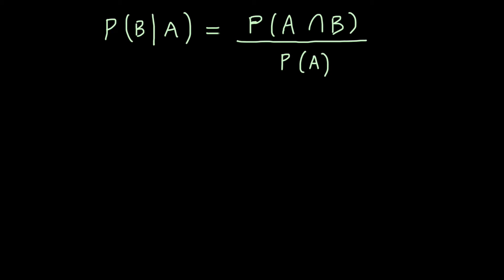Hi everybody, today we're going to look at the concept of conditional probability. Conditional probability is basically the probability of a certain event given knowledge about the occurrence of another event.